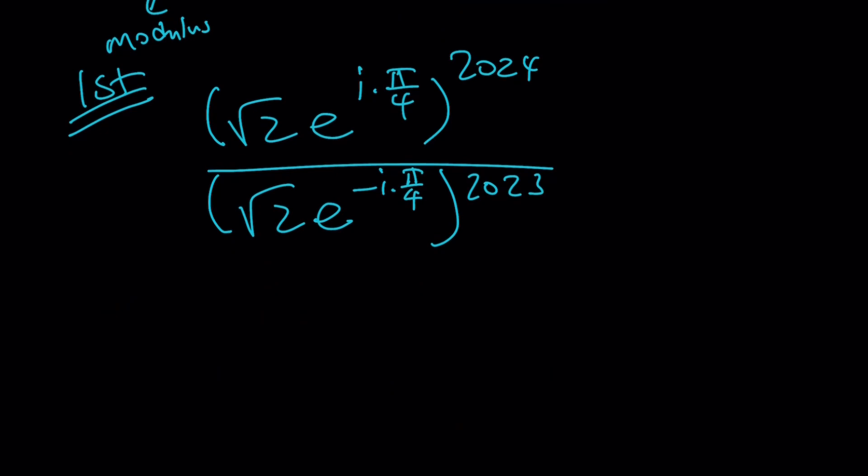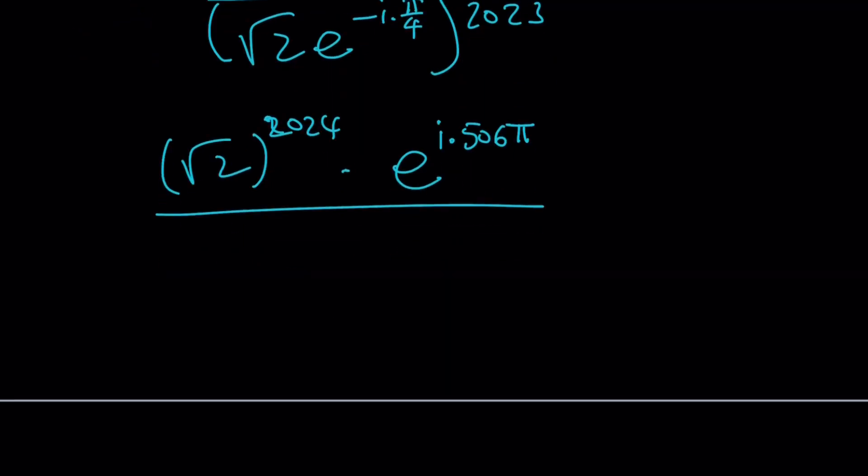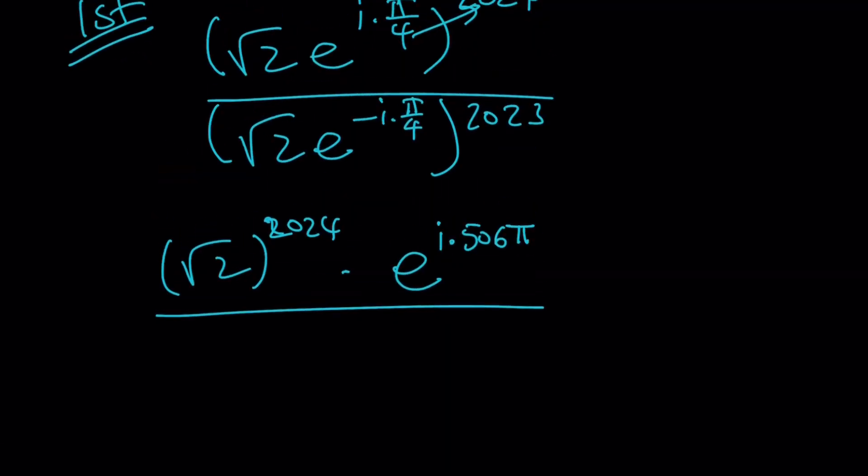So you can write it as root 2 times e to the power negative pi over 4 times i, which happens to be that way. And then raise it to the power 2023. And obviously, this should not be too hard to simplify, right? Well, sort of. Well, we can definitely separate these. First of all, this is going to give me square root of 2 to the power 2024. And then if I take the i, it's just going to be 2024 divided by 4. By the way, that's going to be 506. So it's going to be like i times 506 pi, which obviously contains a lot of pi in it, right?